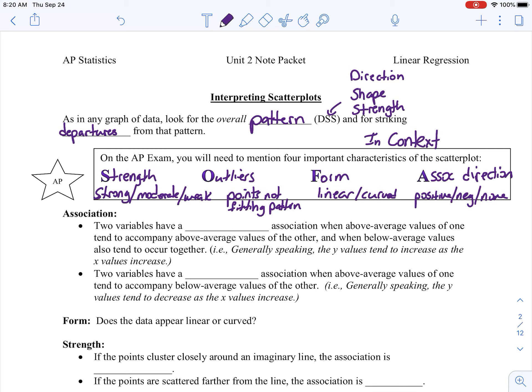So first of all, the association direction. Two variables are going to be positively associated. I have a positive association when above average values of one tend to accompany above average values with the other and below also tend to occur together. So generally speaking, Y increases as X increases. So as the number of notches of my belt increases, so does my weight.